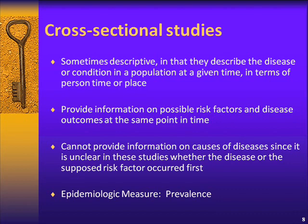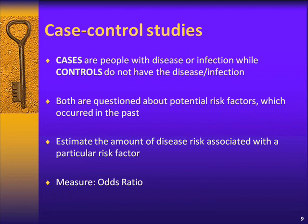The epidemiologic measure most commonly calculated from a cross-sectional study is called prevalence — a measure of how often something occurs in the population. Case-control studies select cases, who are people with disease or infection, and then identify controls who do not have the disease. Both groups are asked about potential risk factors which occurred in the past. An example would be a study where people who had TB were identified and compared to those who did not. We estimate the amount of disease risk associated with each risk factor by calculating odds ratios. In general, the larger the odds ratio, the stronger the risk factor is for that disease outcome.